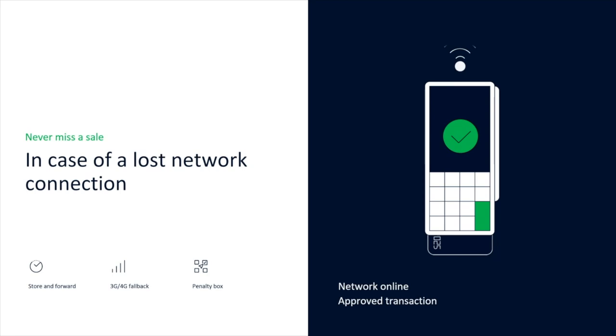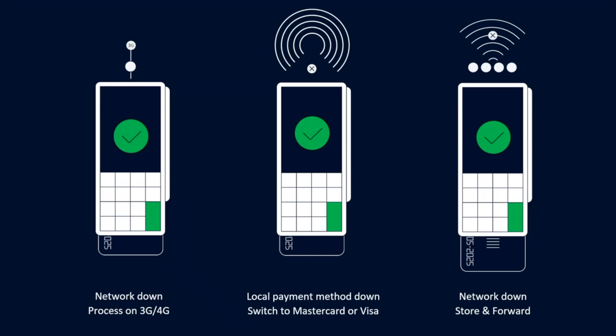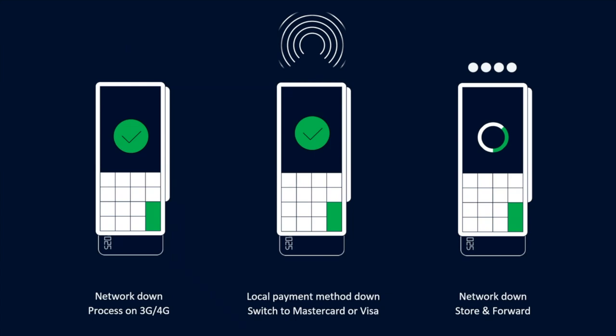Next, how do we handle payments in case of a lost network connection? ADN provides solutions to ensure merchants can continue accepting payments even when there are network issues. The first is Store and Forward: the ADN terminal can store card data and transaction details to process payments later when the internet connection is restored. This feature requires setting up parameters like maximum transaction amount and number of offline transactions allowed per terminal. We also offer a 3G or 4G alternative — when the primary internet connection is down, the ADN terminal switches to a cellular connection to process payments, allowing continuous transaction processing.